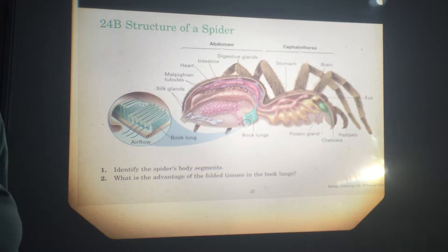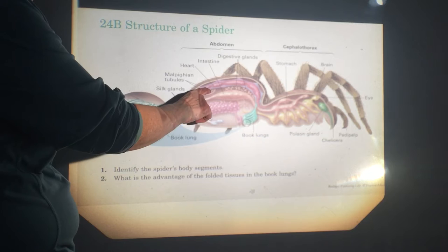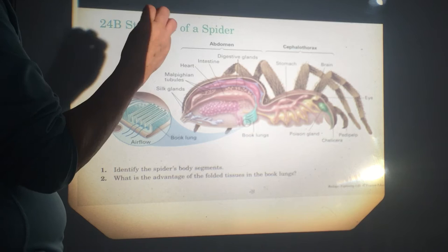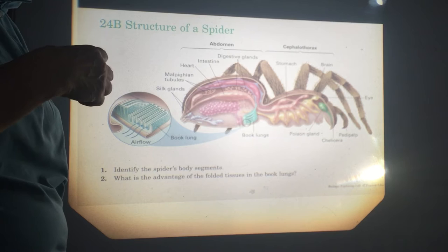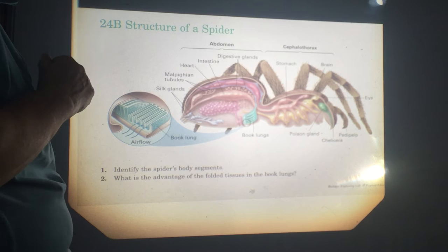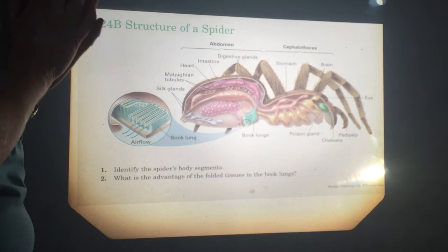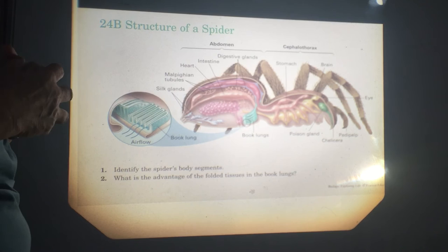This structure right here — I haven't really talked about it yet — consists of kidney-like structures called Malpighian tubules. They have the same function as our kidneys: to remove waste products and also to reduce water loss. Those are located right here. That's all I wanted to say about the arachnids.